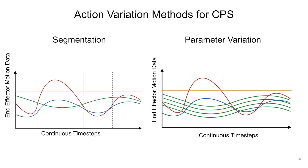In this work we introduce two types of action variation methods: variation through segmentation of existing actions, and variation of the parameters associated with the execution of existing actions, such as rate of movement, magnitude of movement, and orientation.